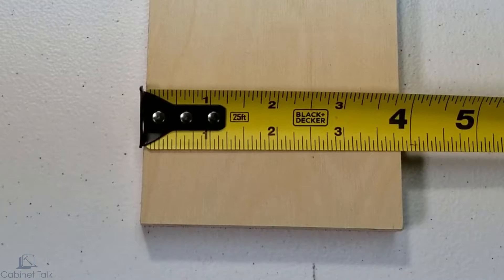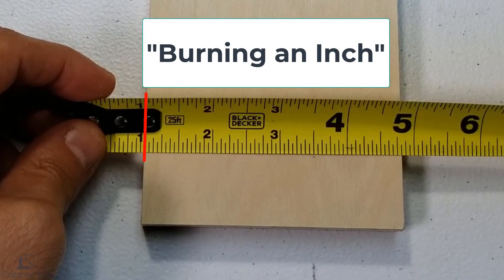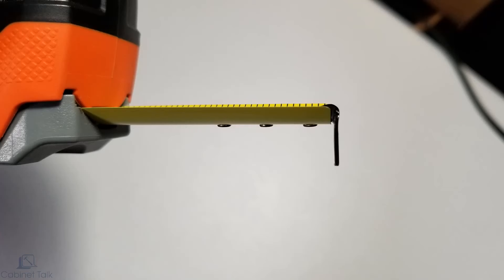For extra precision, you can hold the tape and measure from the one-inch mark. This is known as burning an inch. When taking a measurement this way, remember to subtract one inch afterward.